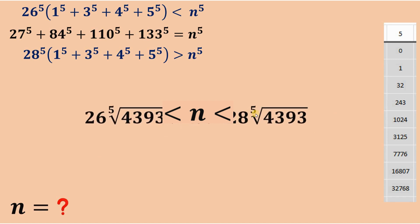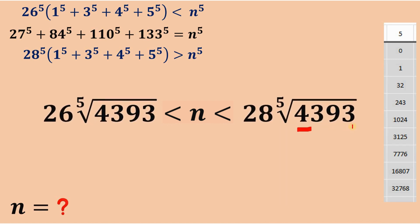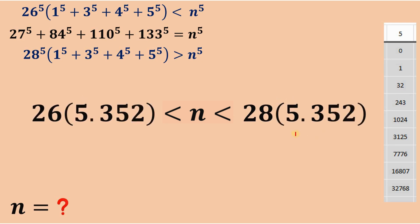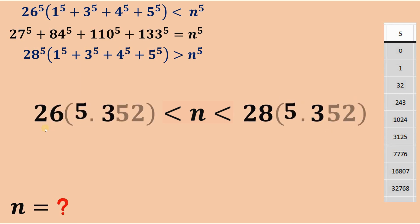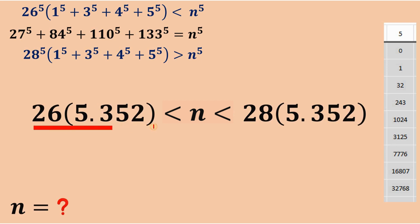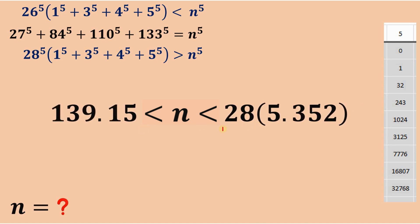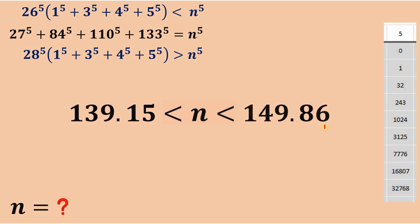Now, 4,393 is between 3,125 (which is 5 raised to the fifth power) and 7,776 (which is 6 raised to the fifth power), meaning the approximate value of the fifth root of 4,393 is about 5.352. Multiplying 26 by 5.352 gives approximately 139.15, and multiplying 28 by 5.352 gives approximately 149.86.